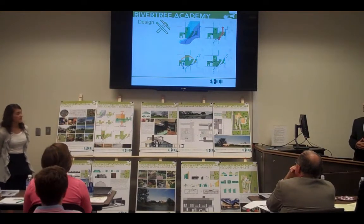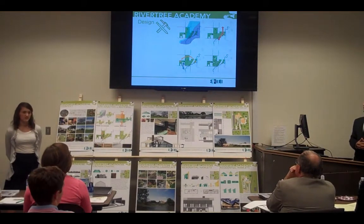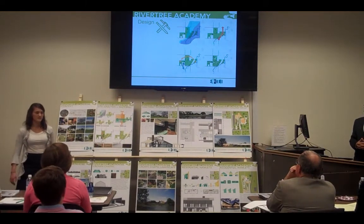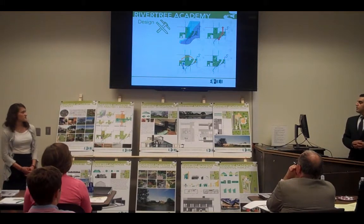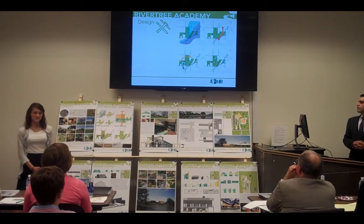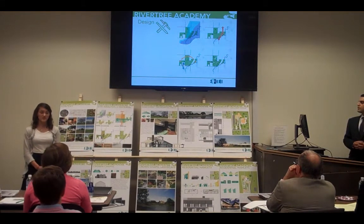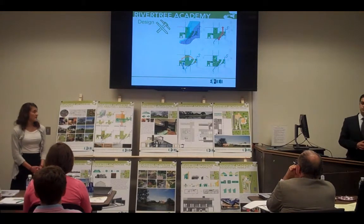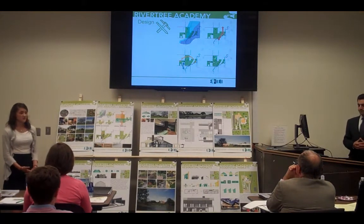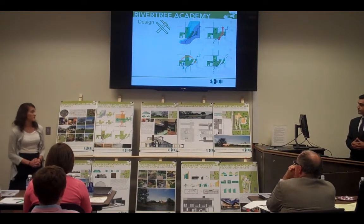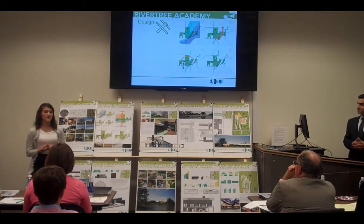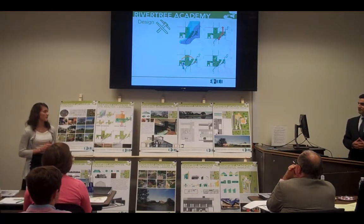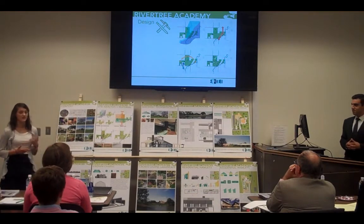The floodplain and the county easement that run through our site limited the placement of where we could put our buildings. We considered the solar angles as well as the existing vegetation for each of our buildings so that the vegetation and trees would not be disturbed. We also noted the views of the iconic tree and of the highest point on the site that we wanted to preserve.